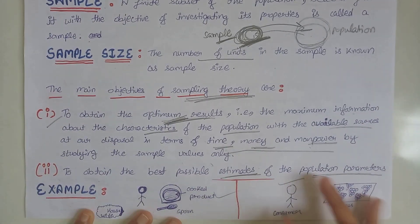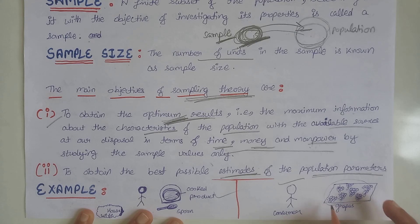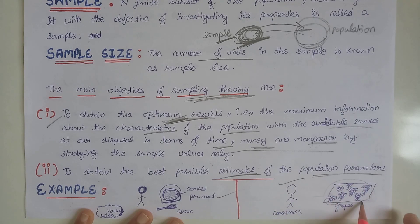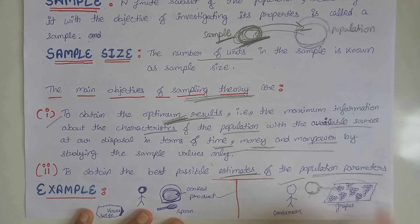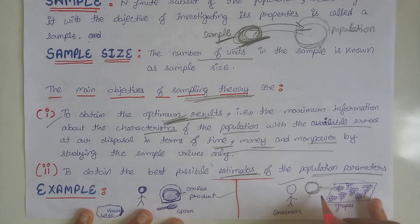We can understand sampling theory through two examples. If a customer wants to buy grapes from a salesman, the whole lot of grapes is the population. He wants to know the taste — that is, the characteristic — of all the grapes. He will not taste every grape; instead, he takes two or three grapes as a sample, tastes them, and from this determines whether the taste of the whole lot is okay, then decides whether to buy.